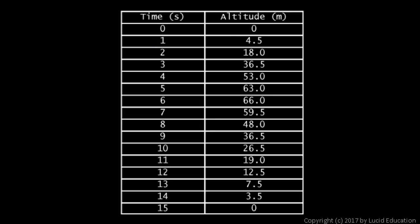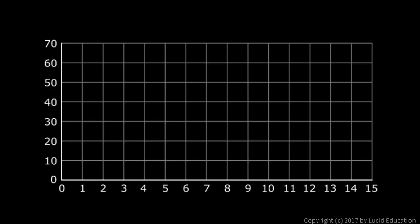The altitude increased up to a maximum at around six seconds, then the numbers start going lower, back down to zero. We don't have a graph, but we're going to plot these points to get a visual picture of what's going on. At time zero, altitude was zero; at 1s it was 4.5; at 2s it was 18; at 3s it was 36.5; at 4s it was 53; at 5s it was 63; at 6s it was 66 — just above halfway between 60 and 70; at 7s it was 59.5; at 8s it was 48.